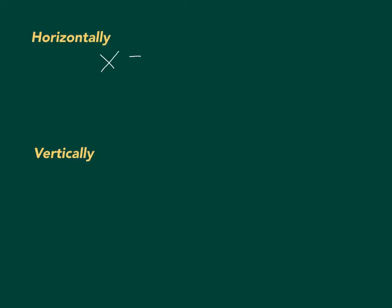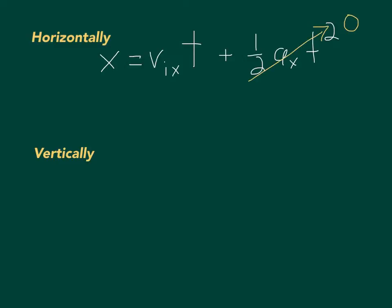Let me write down the two basic equations. Horizontally: x equals V initial x times time, plus one-half times the acceleration in the x direction times time squared. But there is no acceleration in the x direction — gravity acts only vertically. So the motorcyclist moves at constant horizontal velocity, meaning x equals V initial x times time.